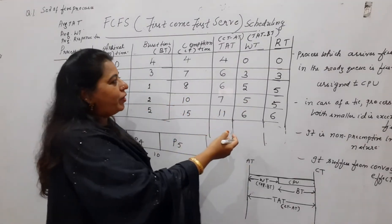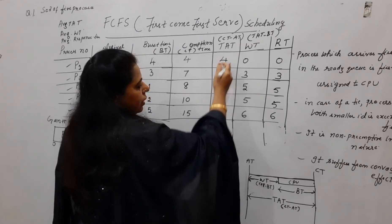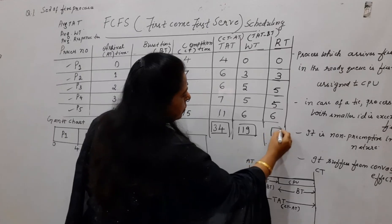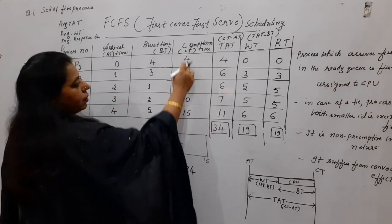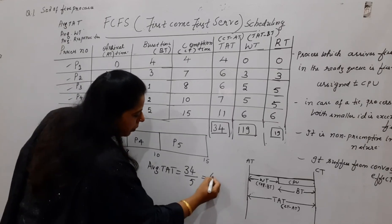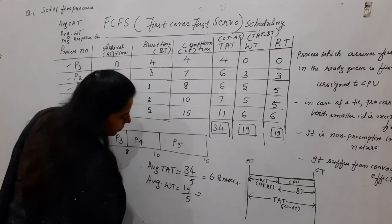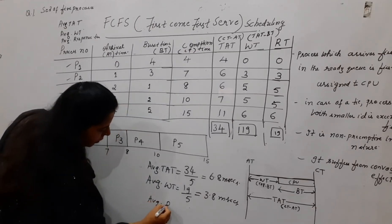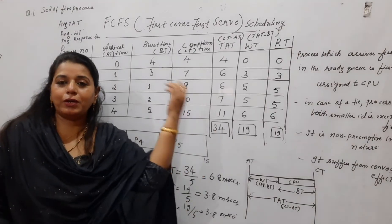Once done writing all the different times, add up the turnaround time values: 4 plus 6 plus 6 plus 7 plus 11 equals 34. Average turnaround time is 34 divided by 5 equals 6.8 milliseconds. The sum of waiting times is 0 plus 3 plus 5 plus 5 plus 6 equals 19. Average waiting time is 19 divided by 5 equals 3.8 milliseconds. Since response time equals waiting time in this non-preemptive algorithm, average response time is also 19 divided by 5 equals 3.8 milliseconds.